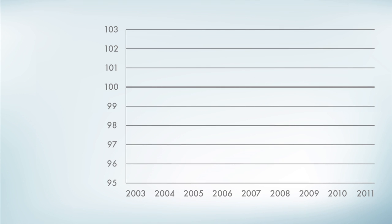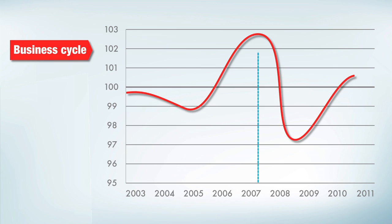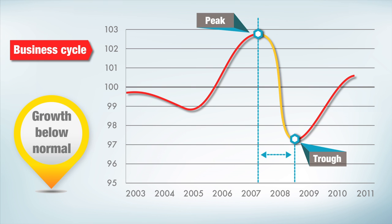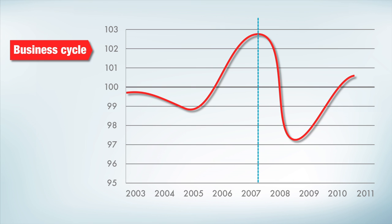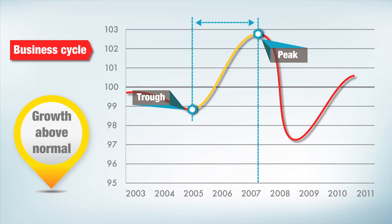They're usually represented in graphic form, starting with the business cycle, which measures fluctuations in economic activity. Between a peak and a trough, the downward slope indicates growth below normal. Similarly, between a trough and a peak, the upward slope indicates growth that is faster than normal.